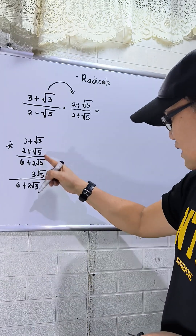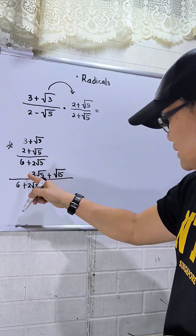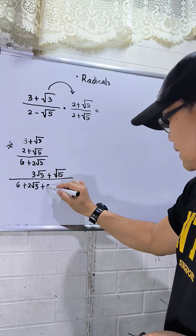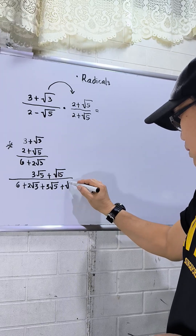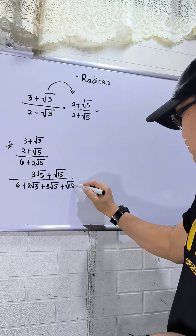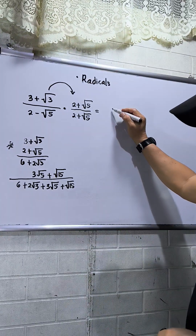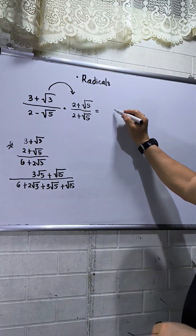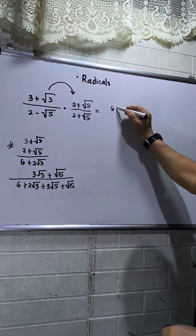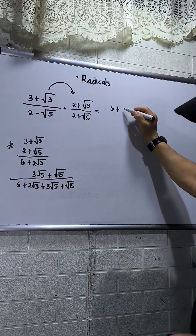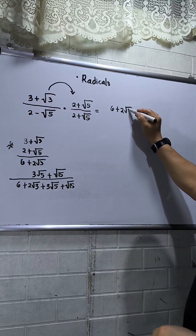Since they are not like terms, just copy them. This is positive, so this will be three square root of five. So the numerator is six plus two square root of three plus three square root of five plus square root of fifteen.